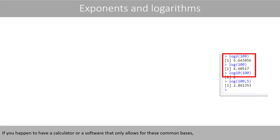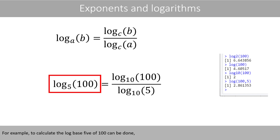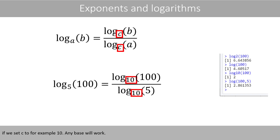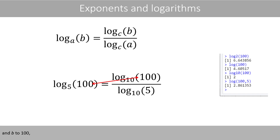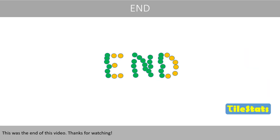If you happen to have a calculator or software that only allows for these common bases, you can use the change of base formula. For example, to calculate the log base 5 of 100: if you set C to 10 — any base will work — we set A to 5 and B to 100, and do the math. This was the end of this video. Thanks for watching.